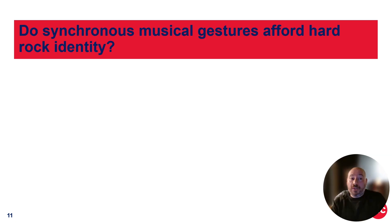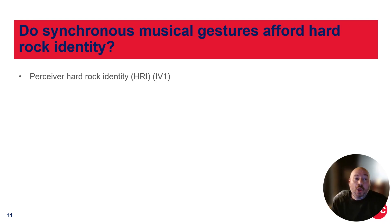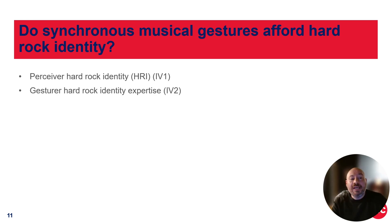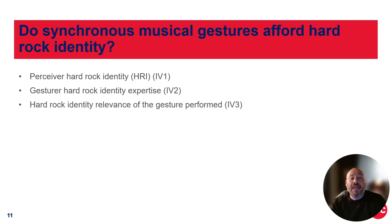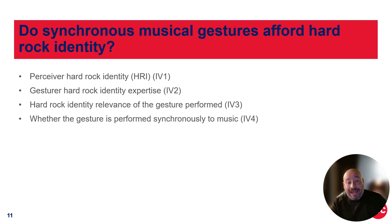So the main question will be: do synchronous musical gestures afford hard rock identity? First, we're going to measure the perceiver's hard rock identity — the person viewing the videos. Second, we're going to look at the gesture's hard rock identity, and we're going to have two extremes: someone who's a rock musician and someone who's a classical musician who doesn't know anything about rock music. And then we're going to have the hard rock relevance of the gesture they're performing, and whether the gestures are performed synchronously to music or not.